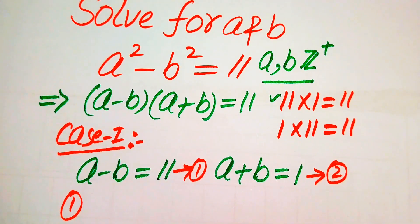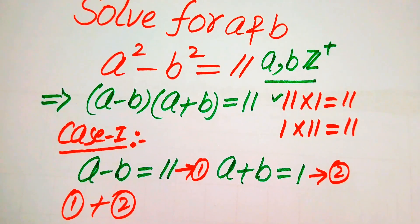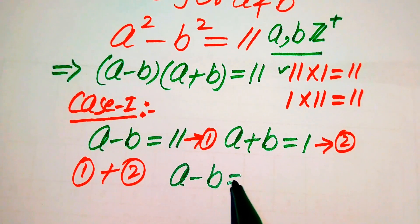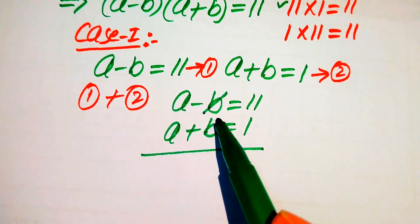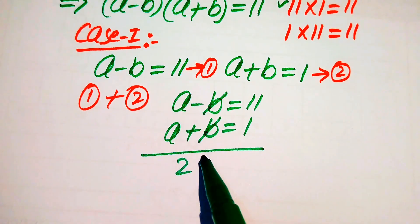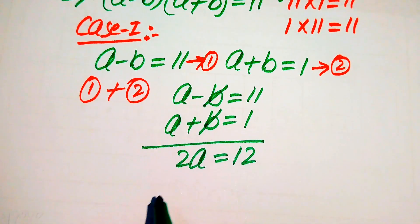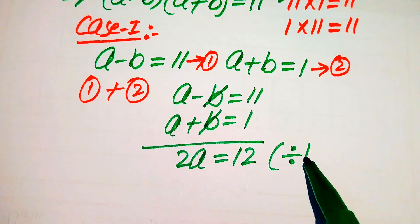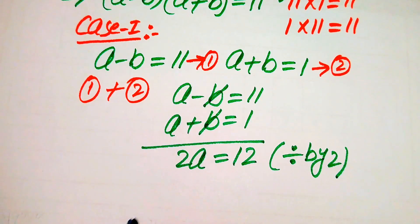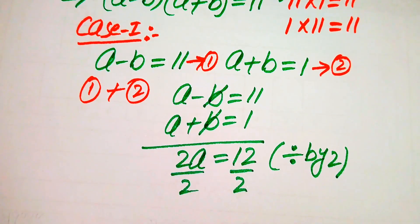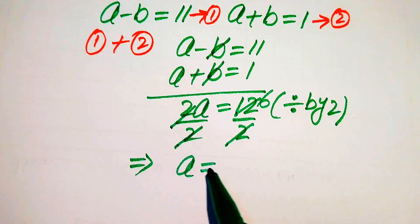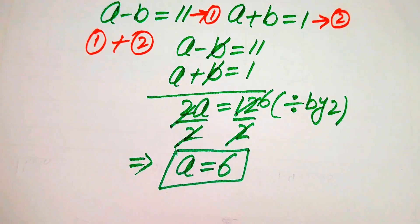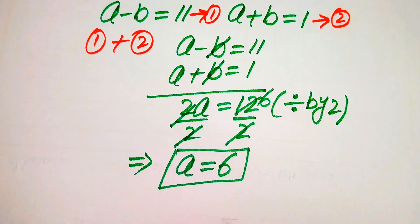First we find the values of a and b from Case 1 by adding equation 1 and equation 2. Adding: (a minus b) + (a plus b) = 11 + 1. The b terms cancel, giving 2a = 12. Dividing both sides by 2, we get a equals 6. This is our first positive integer value of a.